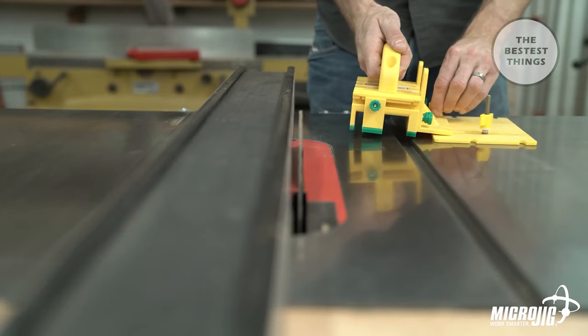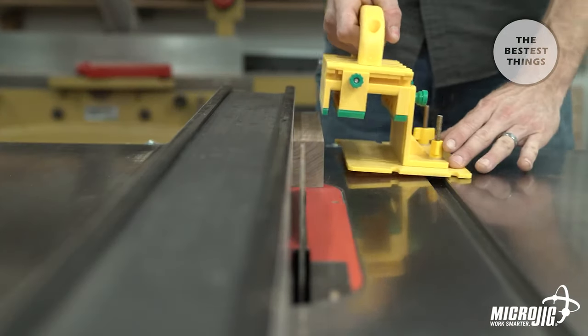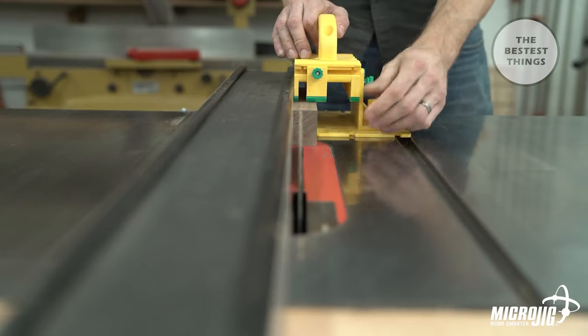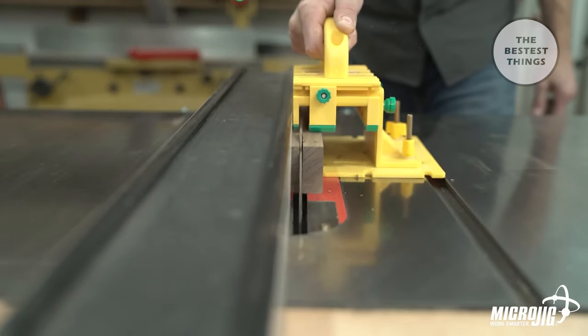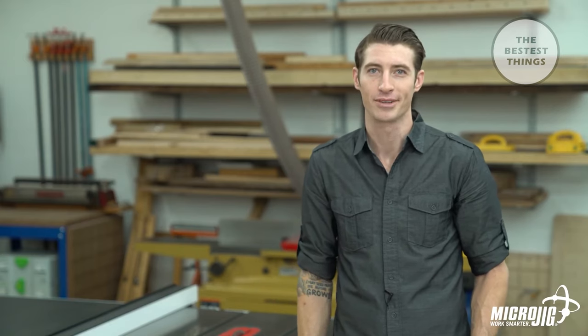The stabilizing plate gives you another point of contact to better stabilize your material. It acts like a dynamic feather board, keeping the material parallel to the blade without applying unnecessary pressure into the blade. It also features a hook to help push small parts through the cut. That means more control and less burning and blade marks.